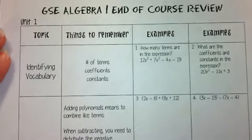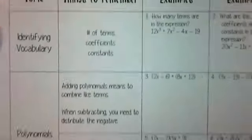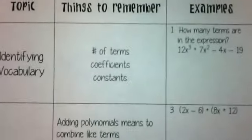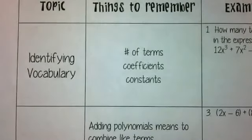Starting off unit one. The first thing we did was just go through some vocabulary that you may have already known. In the first unit, we were talking about polynomials — specifically the number of terms in a polynomial.